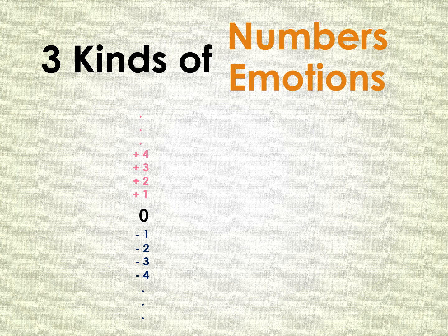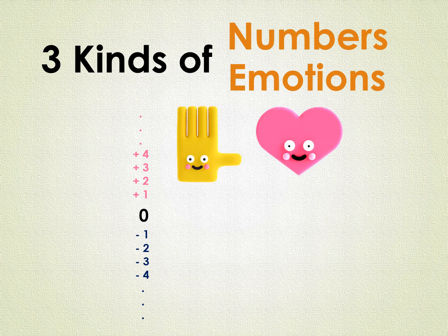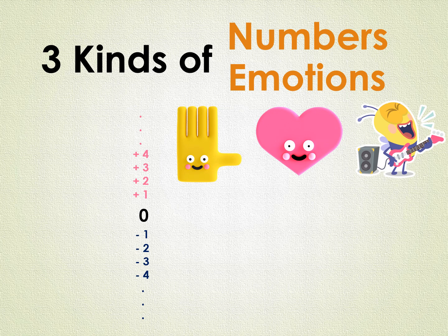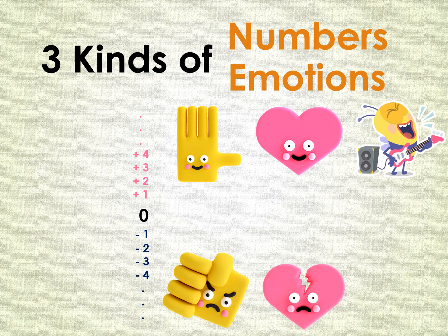Examples of positive emotions are happiness, lovingness, creativeness, and so on. Examples of negative emotions are anger, broken heart, sadness, bitterness, and so on.